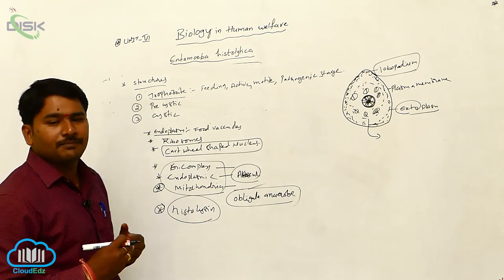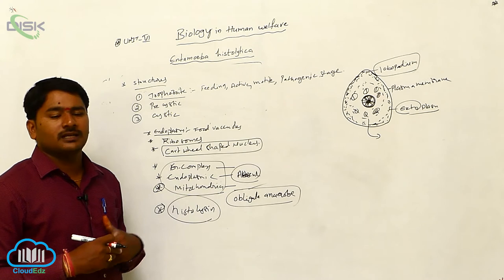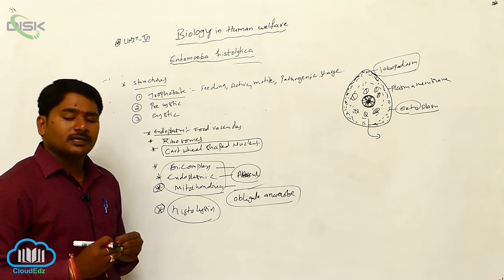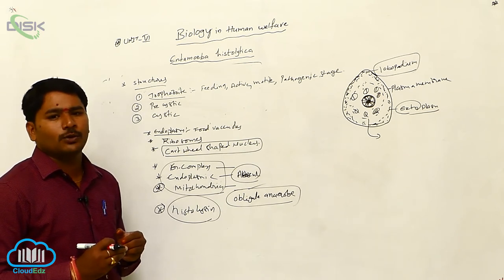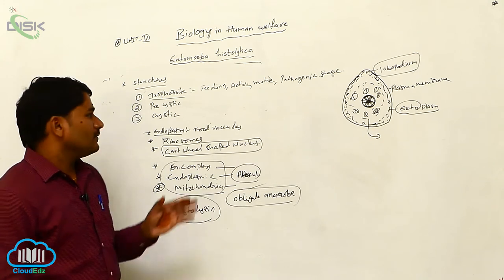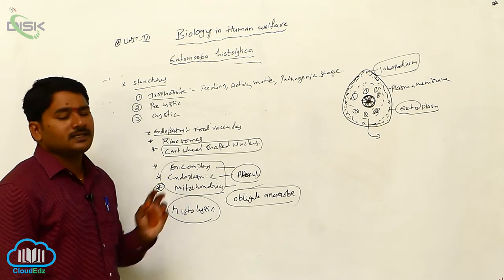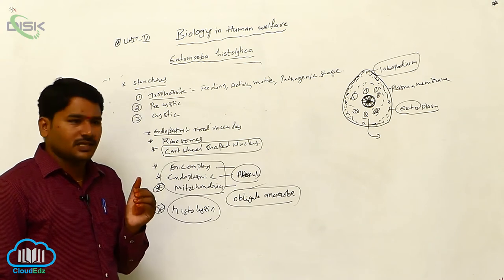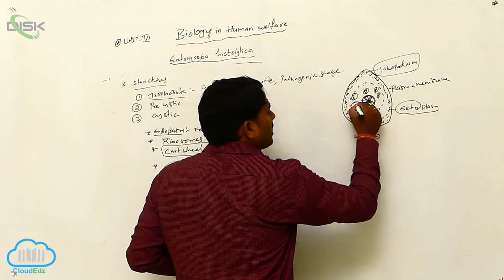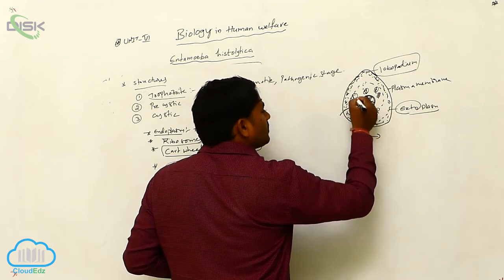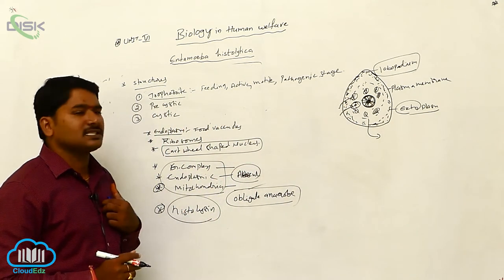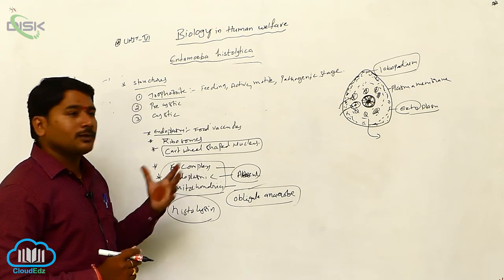The trophozoite enters the intestinal walls and feeds upon tissue debris as well as RBCs. RBCs, bacteria, and tissue debris are ingested and form food vacuoles. When RBC-ingested food vacuoles and bacteria-ingested food vacuoles are present in the fecal matter, we can identify the infection and the trophozoite stage.